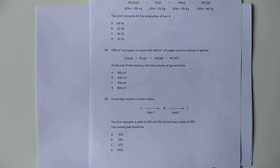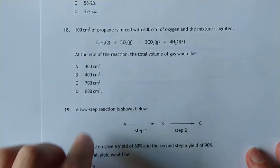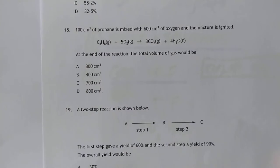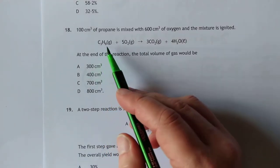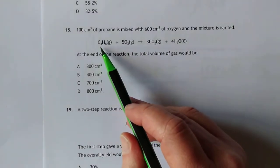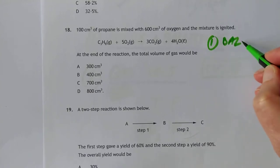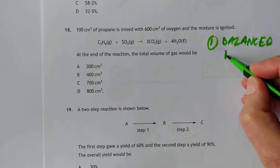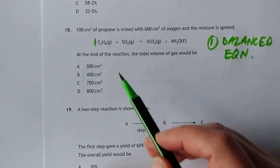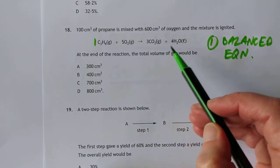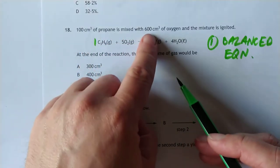Let's look at this multiple choice question. 100 centimeters cubed of propane is mixed with 600 centimeters cubed of oxygen, and it's made to go bang. They're giving you a balanced equation, which is nice. You need a balanced reaction for any mole calculation. Stage one: balanced equation. This is a 1 to 5 reaction. These are gases, this is also a gas, and this is not.